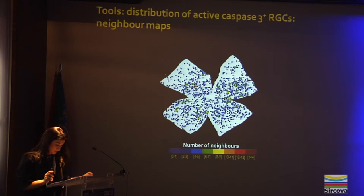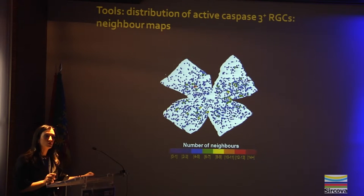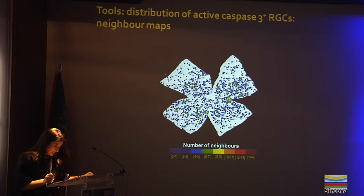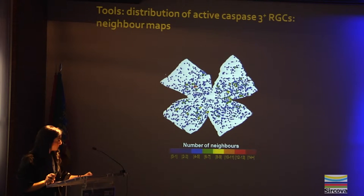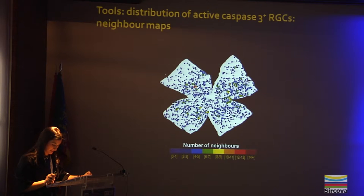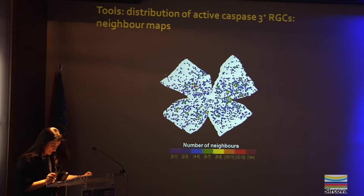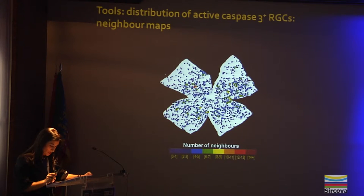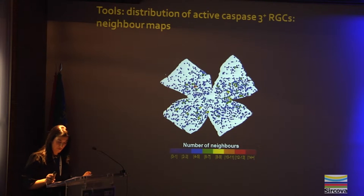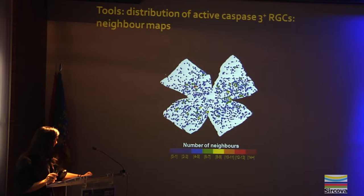The distribution of apoptotic cells was performed using neighbor maps, as we can see in this slide. This tool is very useful to determine the spatial distribution of a cell population. One point represents one cell, and the colors indicate the number of neighbors that this cell has in a radius of 0.16 mm. Cool colors indicate a low number of neighbors, and warm colors indicate a higher number of neighbors.